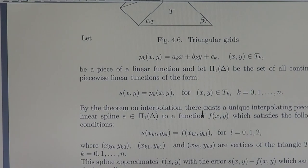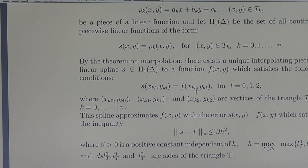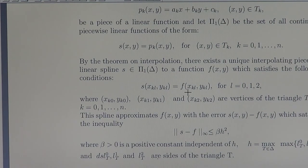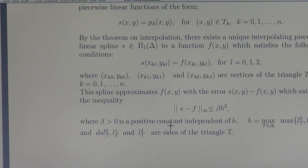By the theorem on interpolation, there exists a unique interpolating piecewise linear spline S to the function, satisfying the interpolating conditions. We can get the coefficients of the linear combination for the interpolating spline from these conditions — we have as many conditions as unknowns. Solving this linear system of equations, we get the interpolating spline. In fact, the system will have a diagonal matrix, so it is not difficult to solve. We also have the error estimate: the error is bounded by a constant beta times H squared, where H is the longest side of all the triangles.